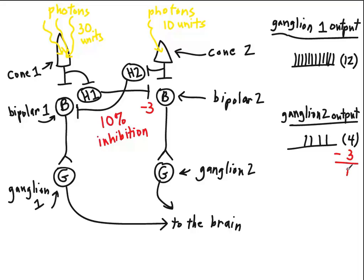That leaves us with a total of 1 unit. And so what would happen to the output here, instead of having 4 action potentials per second, it would drop to 1 action potential per second.